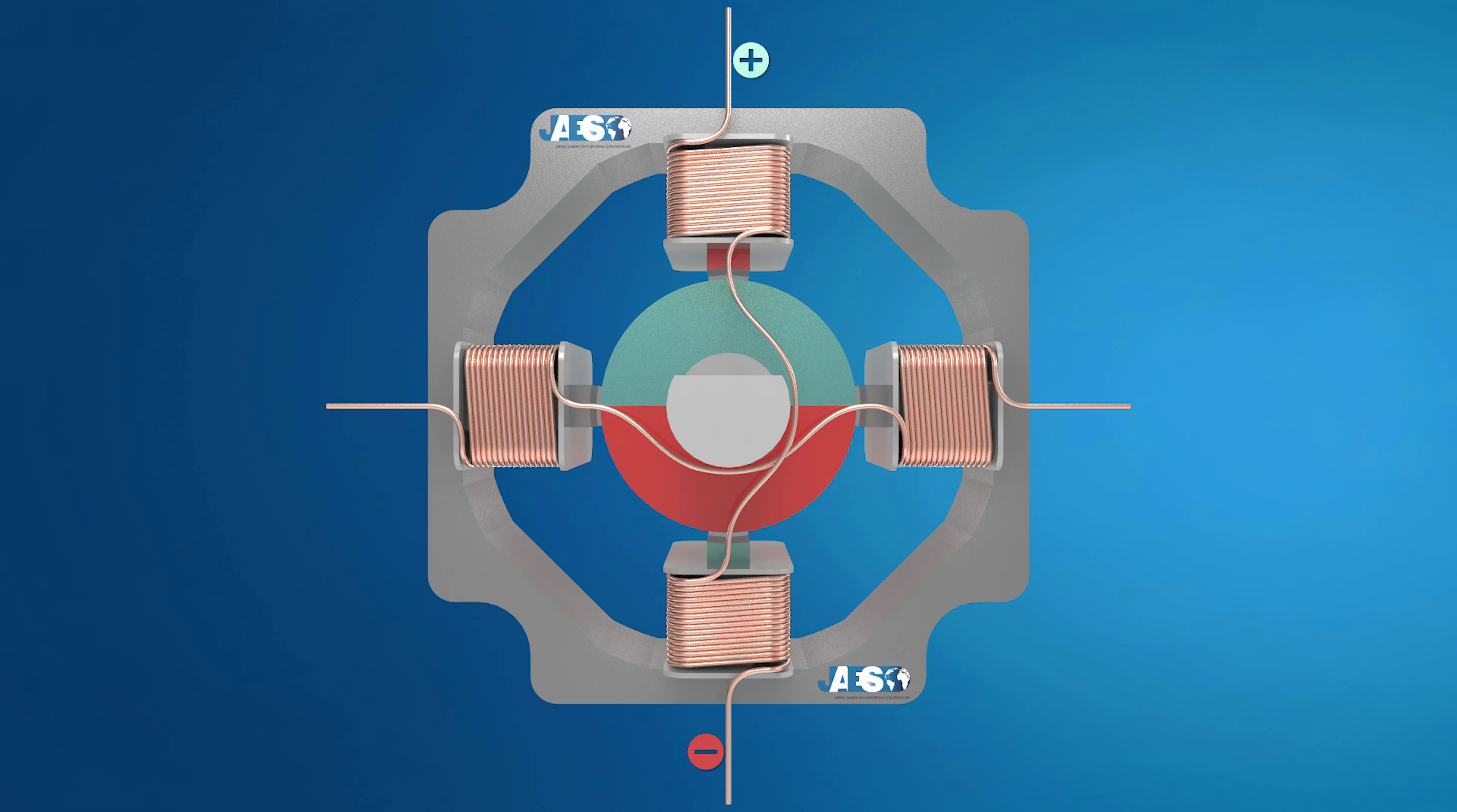In the half step mode sequence you get a step angle which is half the angle during the full mode, so the resolution is already increased to double. This is possible by de-energizing a coil. In this way you get non-constant torque.